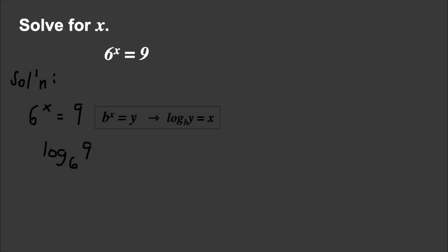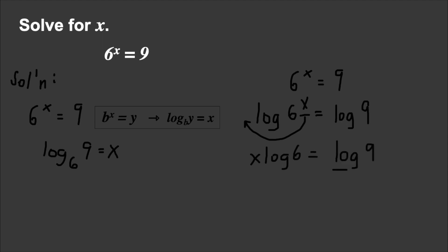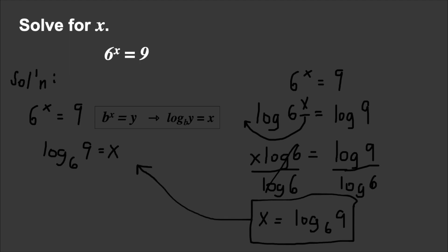Another method is using Method 2 directly: take the log of both sides, giving log(6^x) = log 9. Using Property 5, the exponent becomes the coefficient: x·log 6 = log 9. Dividing both sides by log 6 gives x = log 9 / log 6, which by Property 6 (change of base) equals log base 6 of 9 — the same answer as before.